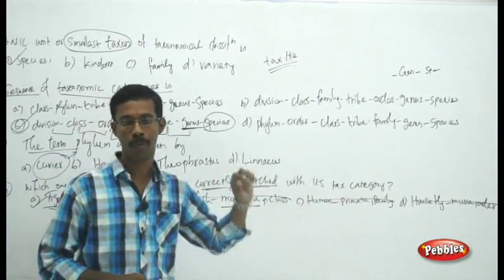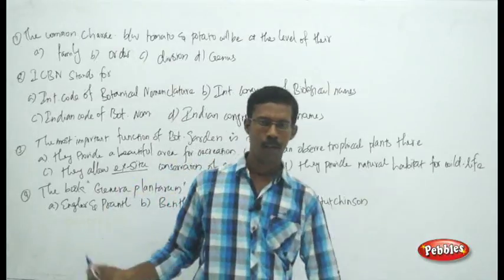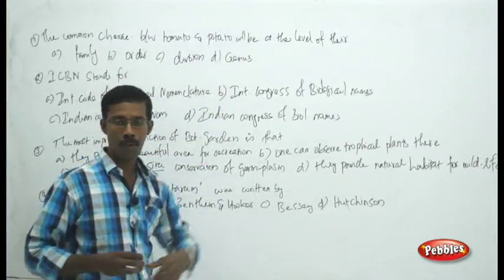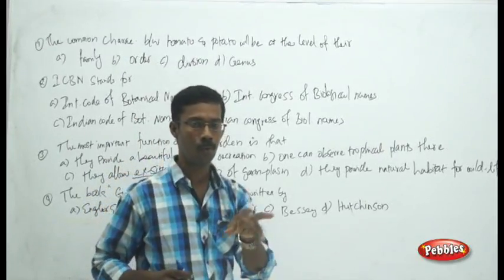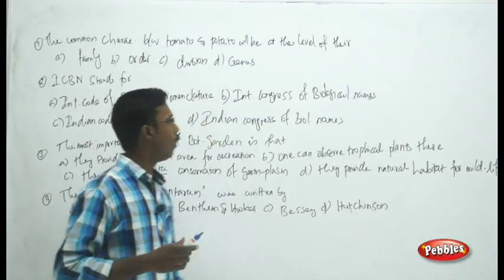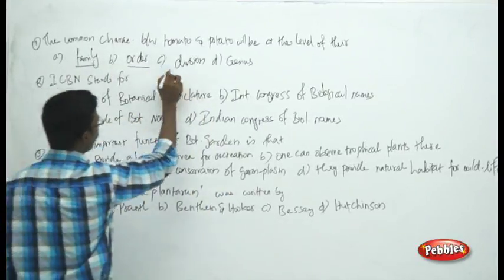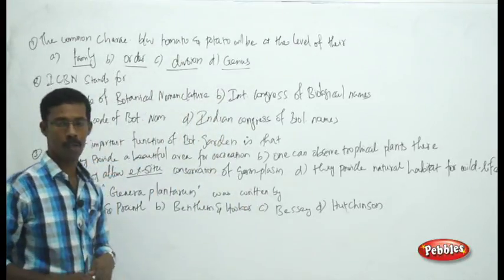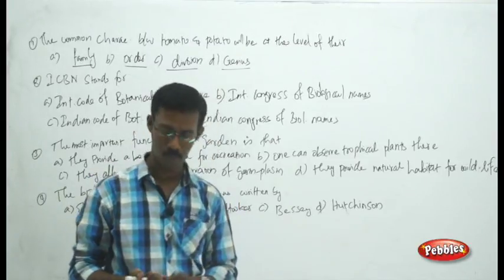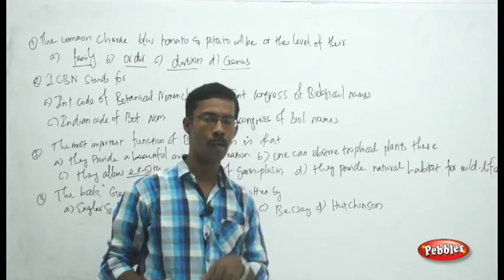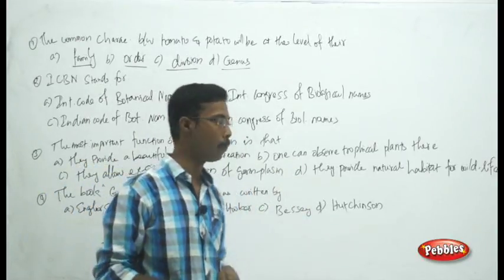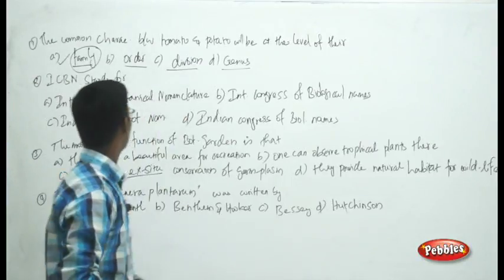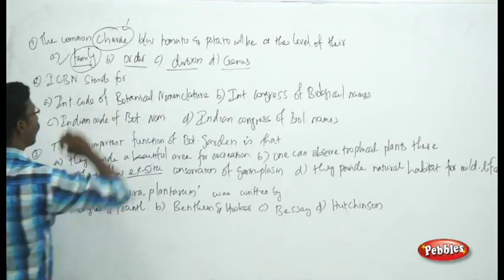Moving to the next set of questions from the Living World: the common characteristics between tomato and potato will be found at which taxonomical level? The choices are family level, order level, division level, or genus level. Both potato and tomato belong to the same family Solanaceae, so they share common characters at the family level.